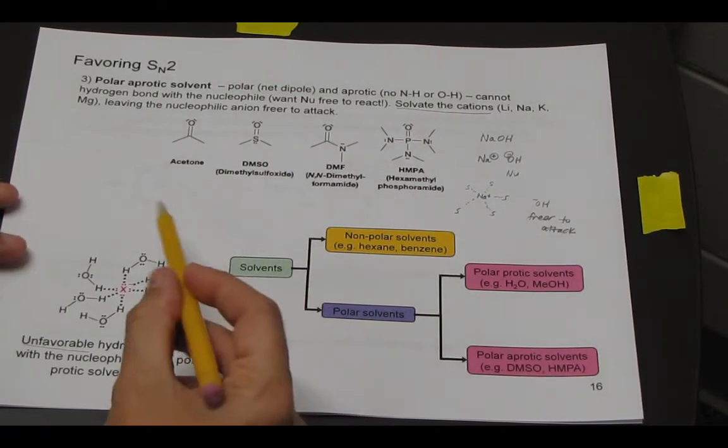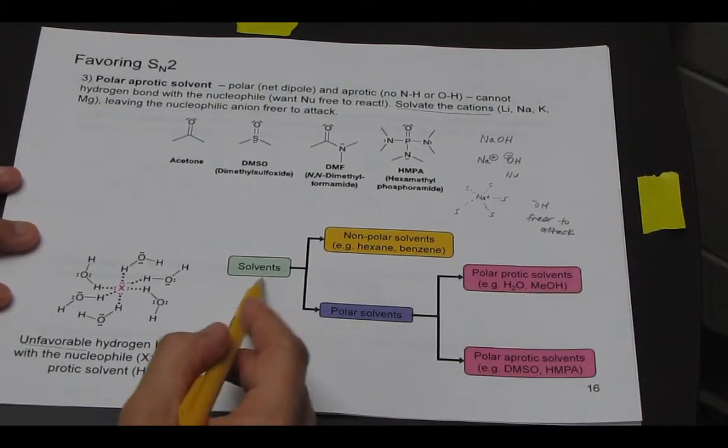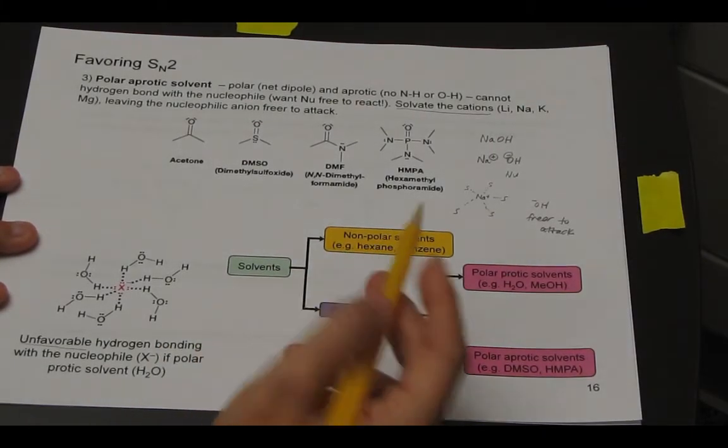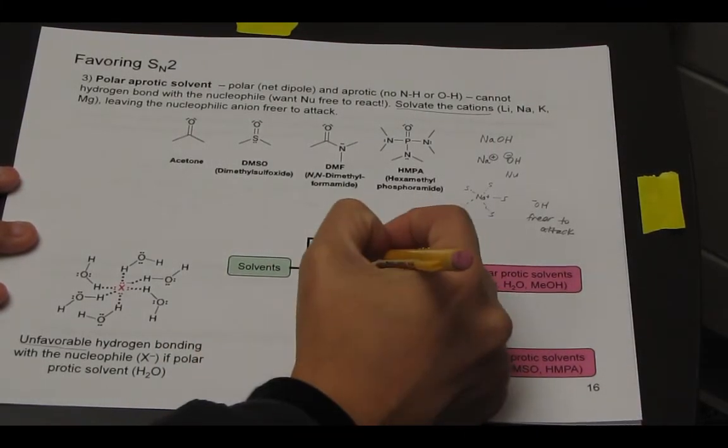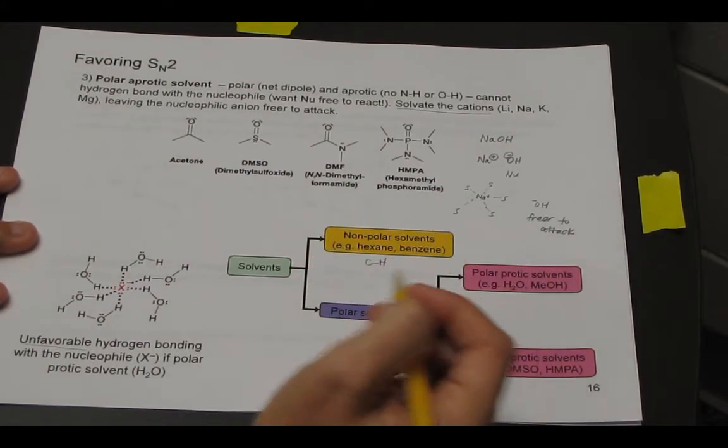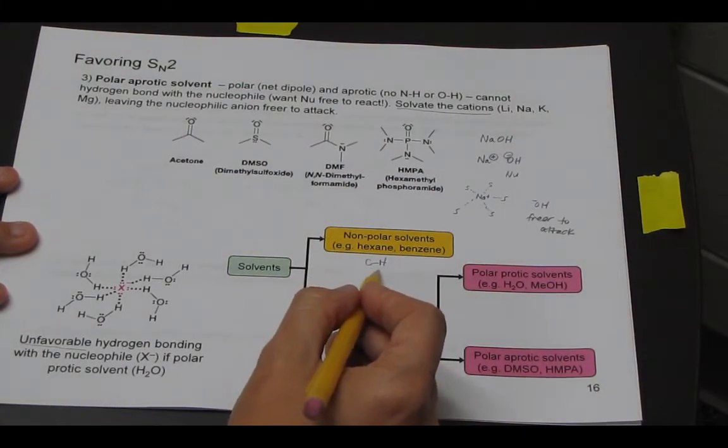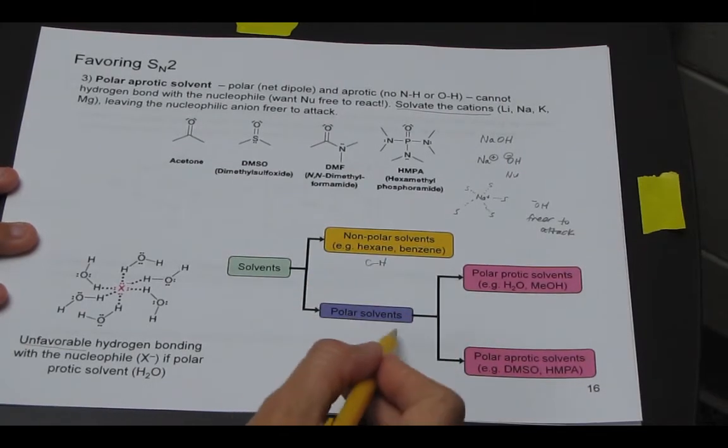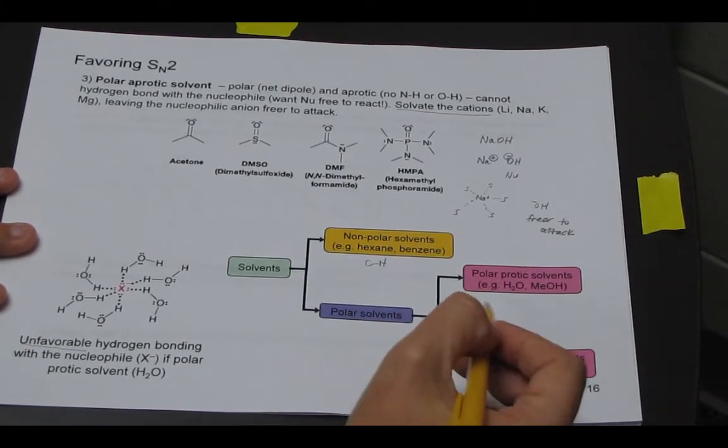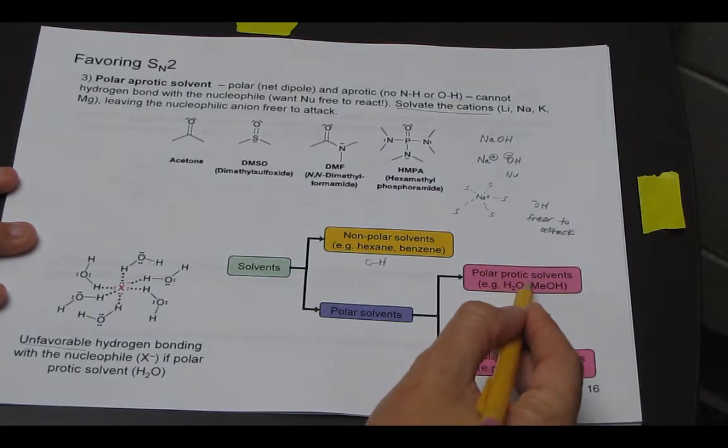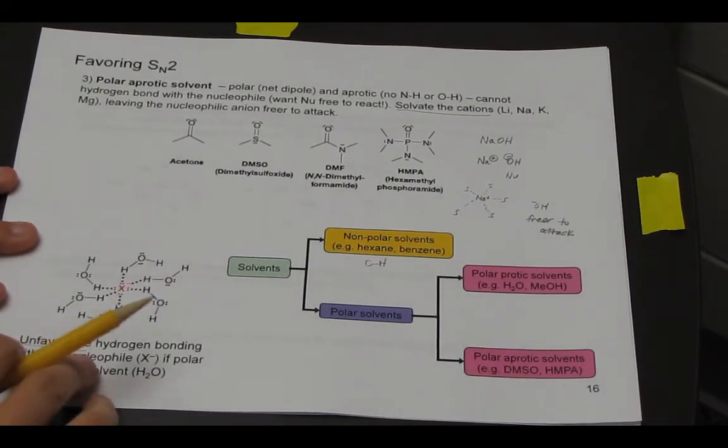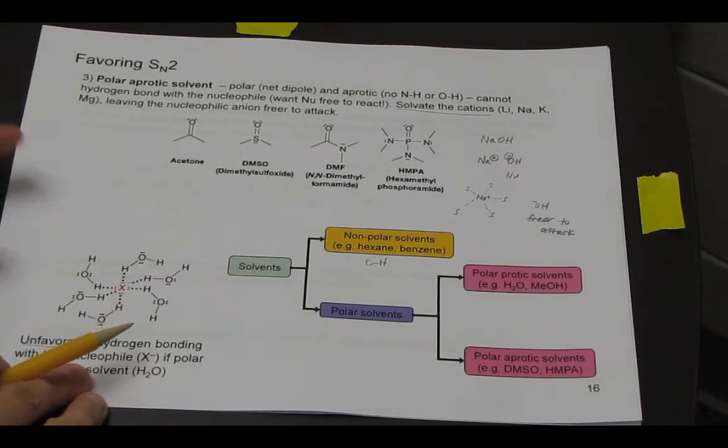And just to show you where polar aprotic solvents fall, as solvents go you're either polar or nonpolar. Nonpolar hexanes and benzene just contain CH bonds. And we had learned that CH bonds are not polar. So we want polar solvents. So we're going to learn polar protic in our next topic and then polar aprotic, which we're talking about on this slide.